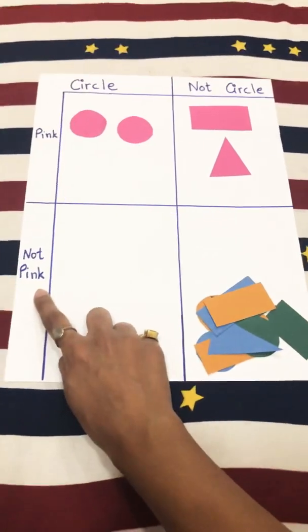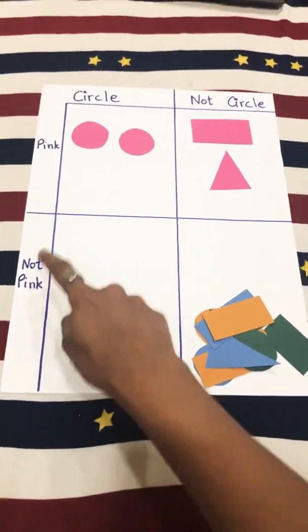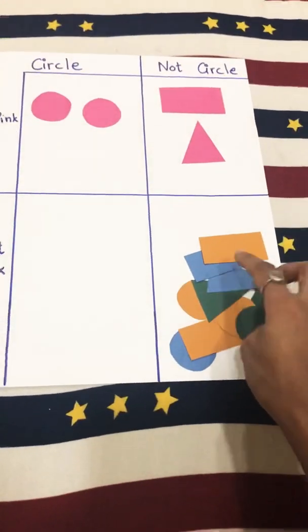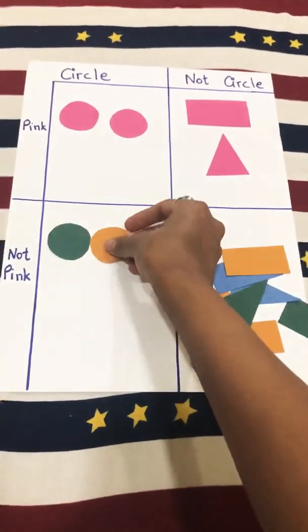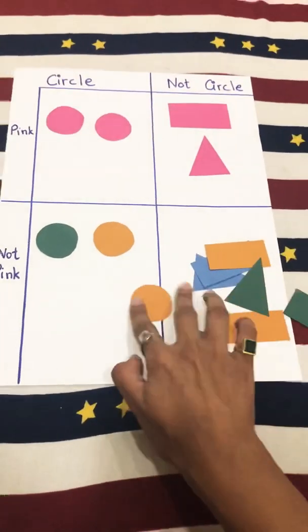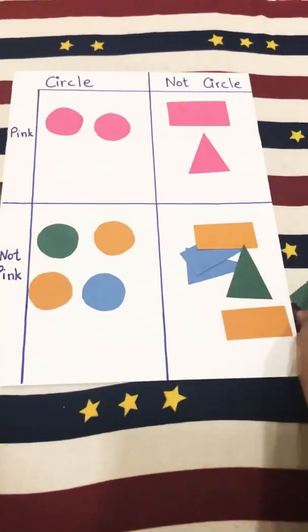The next heading says 'not pink and circle.' So we need to put all the circles which are not pink in color. So I have this, and then I don't have any more.